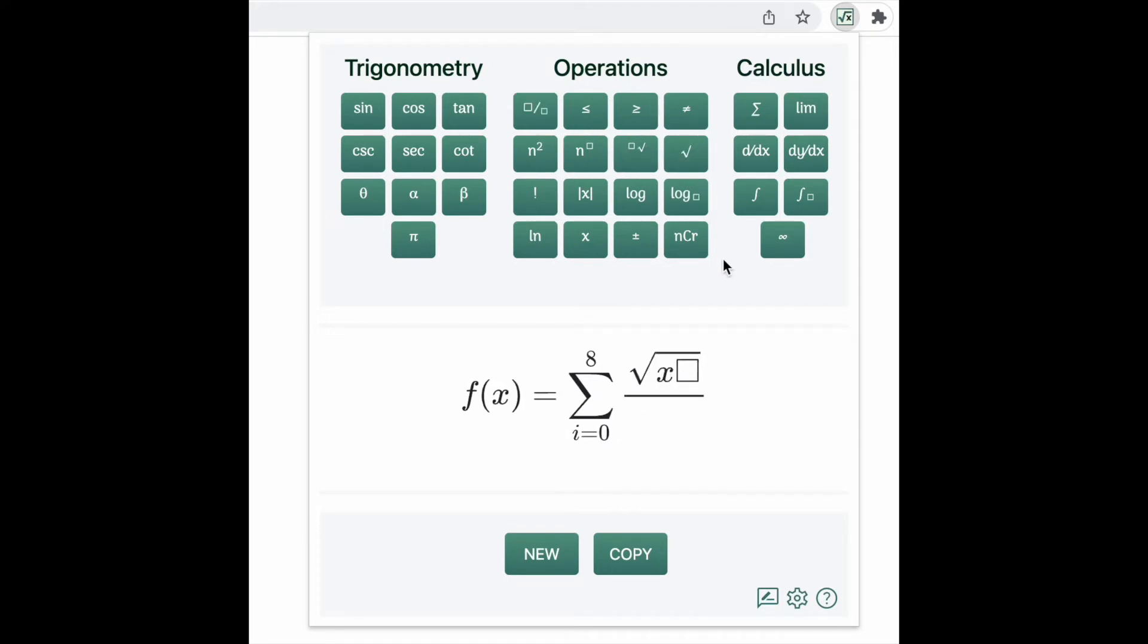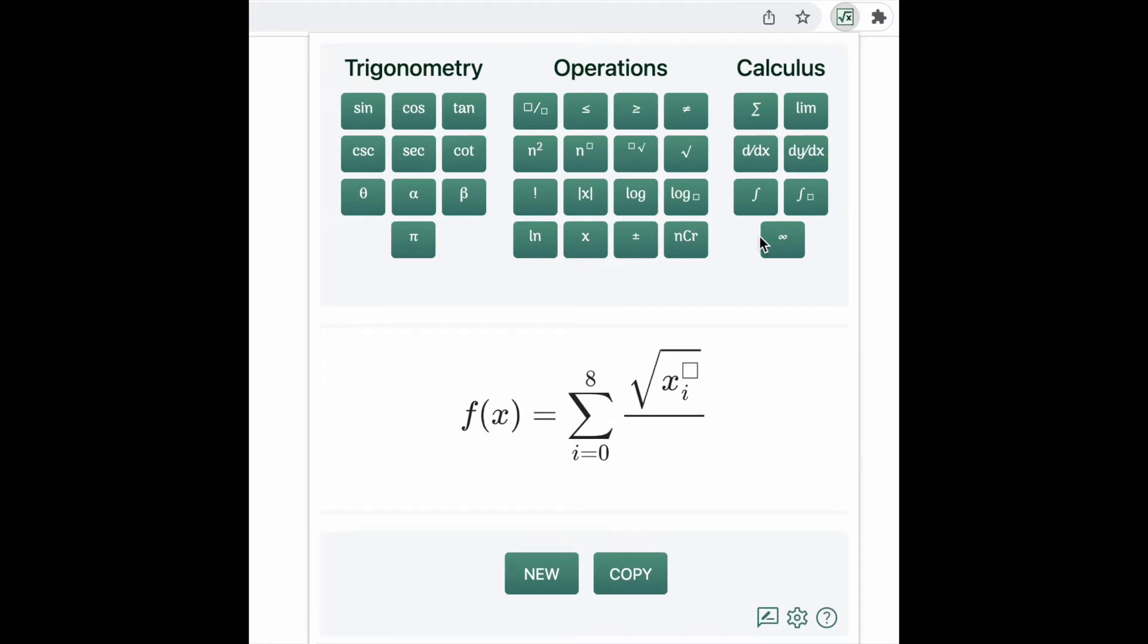Press the square root button and type x. Use the down arrow to get to a subscript and type i, and then press the forward arrow to get out of the subscript. Similarly, press the up arrow to get an exponent and type 3, and then press the forward arrow to get out of the exponent.